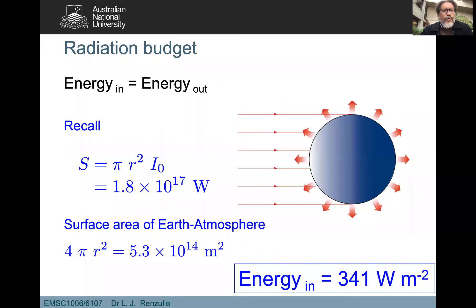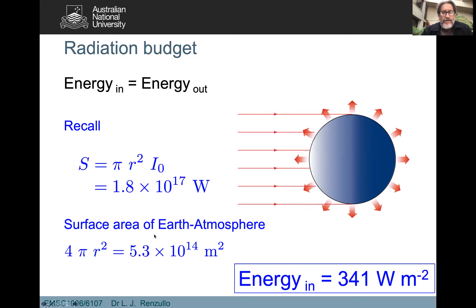Let me go through that one more time. We just did the calculation that the solar constant, when you distribute it over the hemisphere of the Earth illuminated by the sun, gives a distribution of 1.8 × 10¹⁷ watts over that half of the Earth. The whole surface area of the Earth uses a radius of about 6,371 kilometers plus about 100 kilometers of atmosphere on top — our Earth-atmosphere radius. When you distribute that energy over this surface area, the total shortwave radiation energy in is 341 watts per square meter.